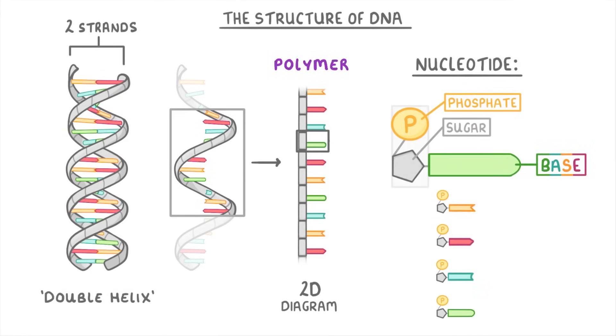Importantly, every nucleotide has exactly the same phosphate and sugar. But when it comes to bases, there are four different types, namely A, T, C, or G.